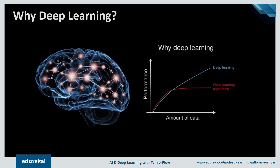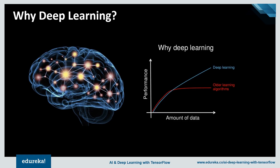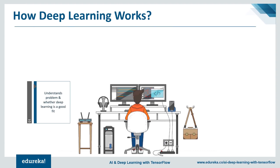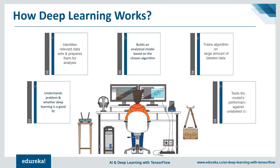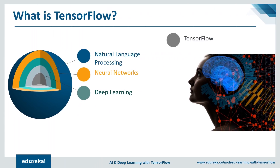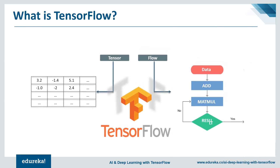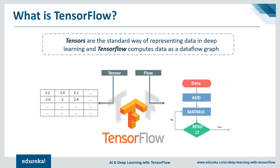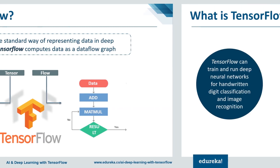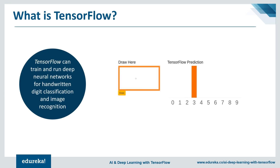In traditional machine learning techniques, most applied features need to be identified by a domain expert to reduce data complexity and make patterns more visible to learning algorithms. The biggest advantage of deep learning algorithms is that they try to learn high-level features from data in an incremental manner, eliminating the need for domain expertise and hardcore feature extraction. Another important layer is TensorFlow. Machine learning frameworks such as Google's TensorFlow ease the process of acquiring data, training models, serving predictions, and refining future results. It is an open source library for numerical computation and large-scale machine learning that bundles together machine learning and deep learning models and algorithms.